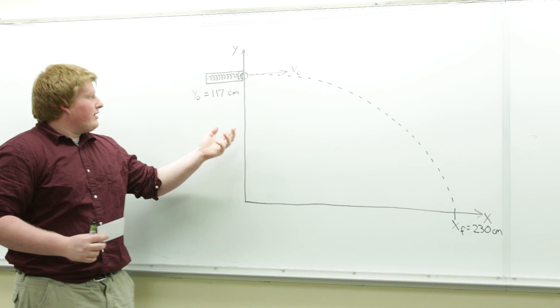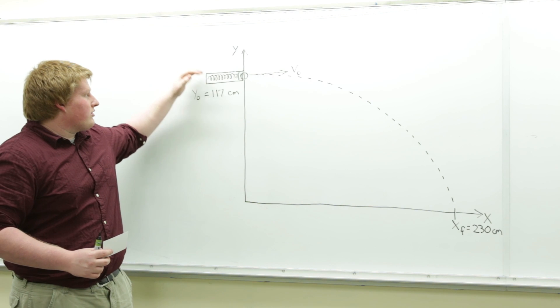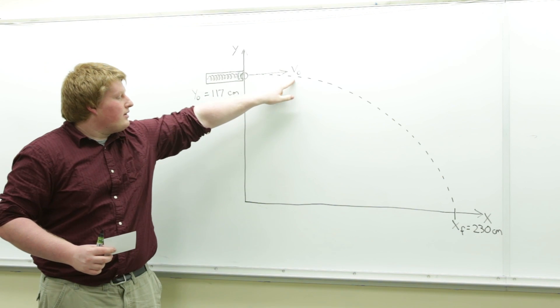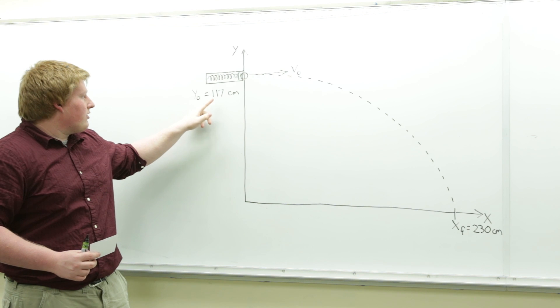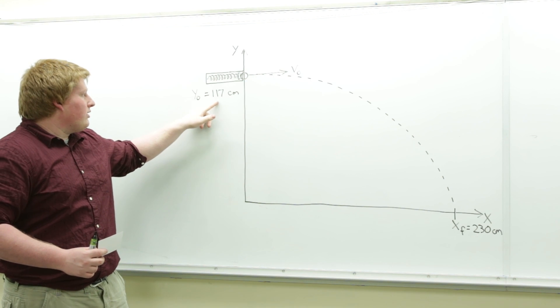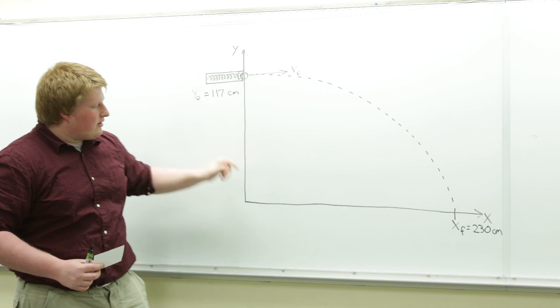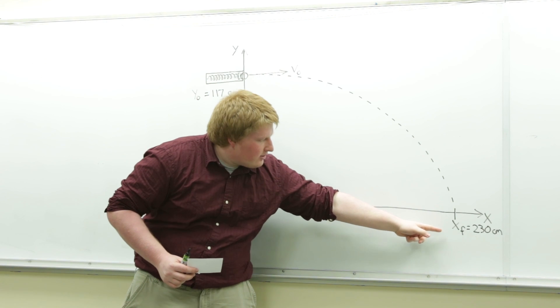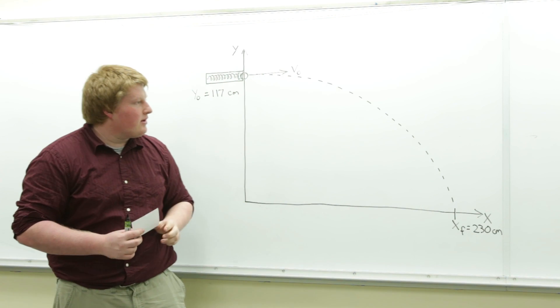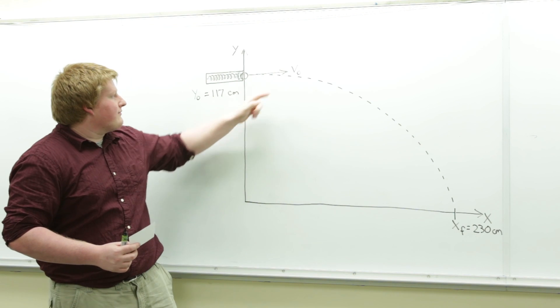According to this diagram, we have our starting position to find V-naught. Through experiments, we found that our R-naught was 1.17 meters and our X-final was 2.30 centimeters. And from these two values, we can find our V-naught.